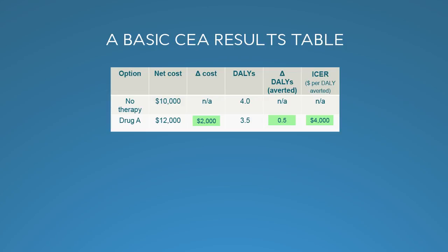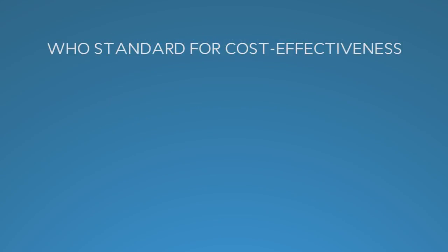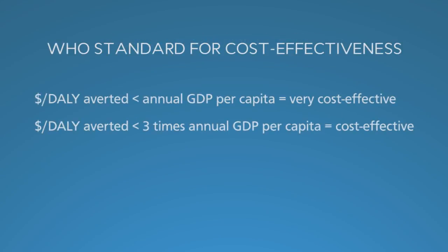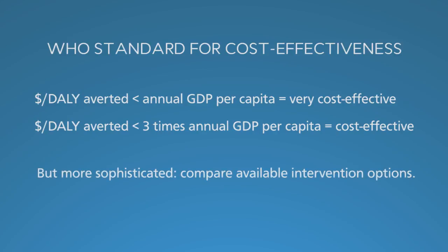People always ask: what's a good ICER? That depends. Currently, the World Health Organization (WHO) specifies an ICER below the local annual GDP per capita as very cost-effective, and below three times the local annual GDP per capita as just cost-effective. A more sophisticated approach is to look at all of the options and pick the set of interventions that are truly the most cost-effective, which may eliminate some that meet WHO standards because they're simply not as cost-effective as other available choices.